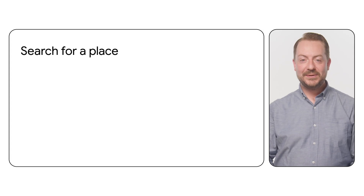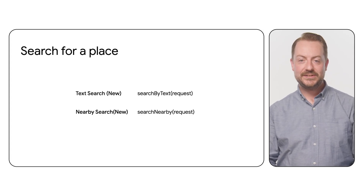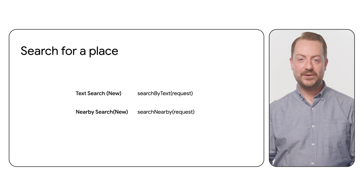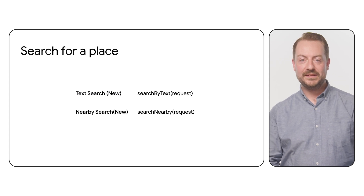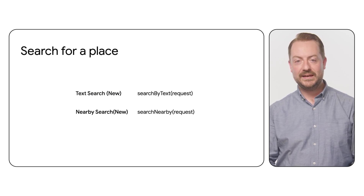With the Places SDK imported in your application, you can use it to either search for places or get details about a place. To search for a place, use either TextSearch or NearbySearch. These can be accessed by calling the relevant method on the Place class and passing through a request containing the search parameters.